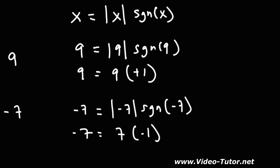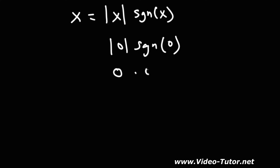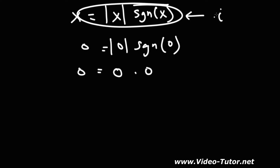We can also try zero: the absolute value of zero times the signum function of zero gives zero times zero, which equals zero. Note that this property does not work for imaginary numbers — it only works for all real numbers. That's it for this video. Hopefully this gave you a good introduction to the signum function: its graph, its domain and range, and how you can express any real number using that function.